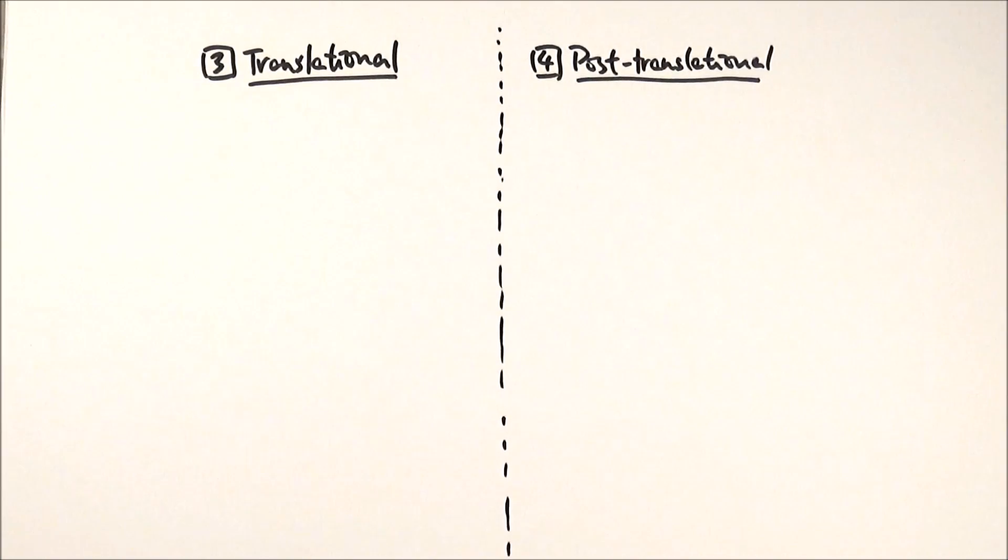In this video, we'll be looking at translational and post-translational levels of gene expression control. We've had transcription happening, and we've modified our mRNA so that it's ready to be translated into an actual protein.